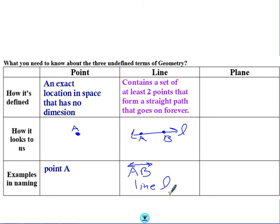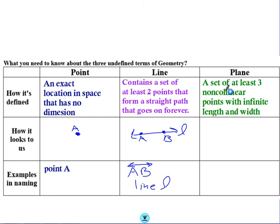A plane. What is a plane? A plane is a set of three non-collinear points with infinite length and width. The word non-collinear means that the three points aren't all on the same line. We're going to talk more about that in a sec.